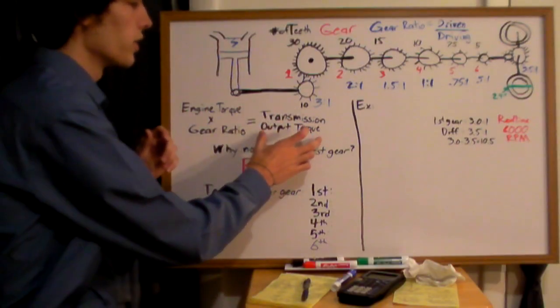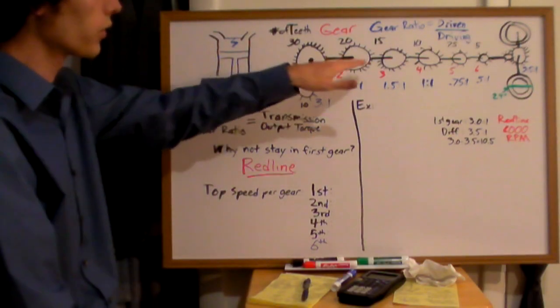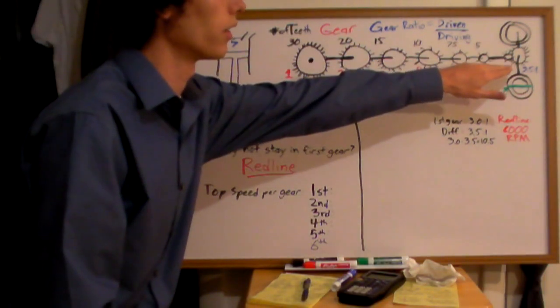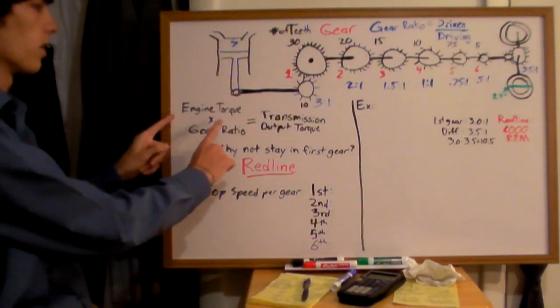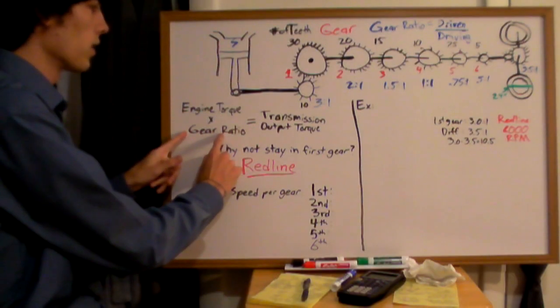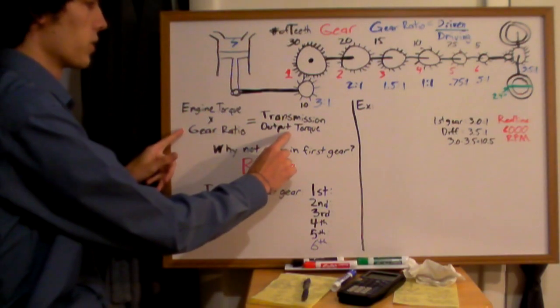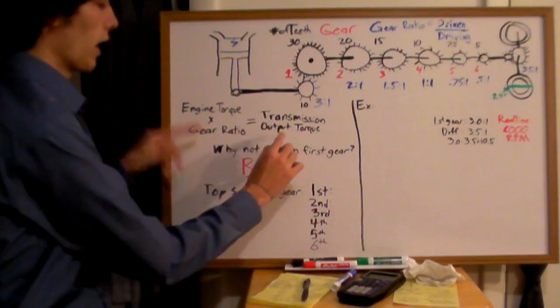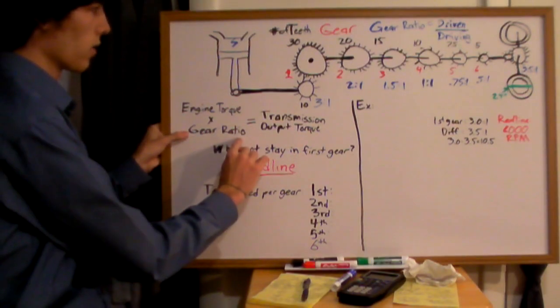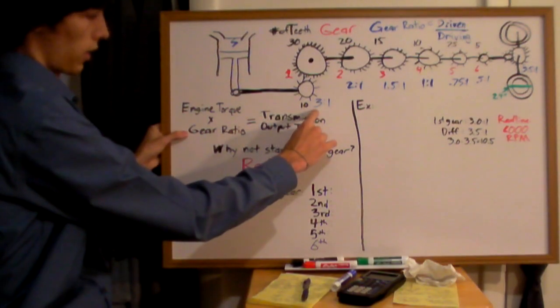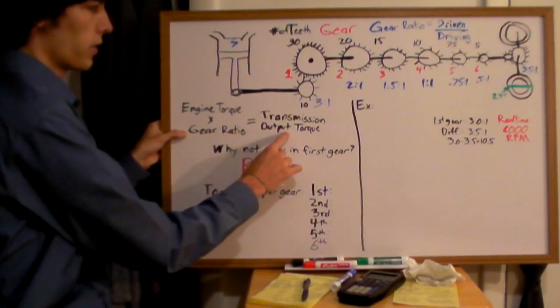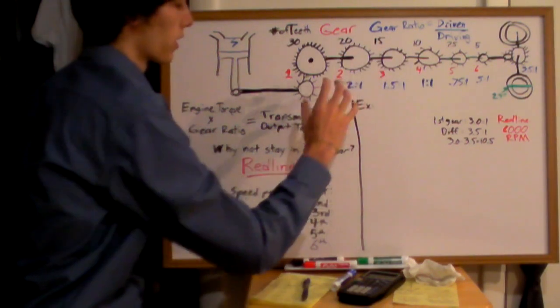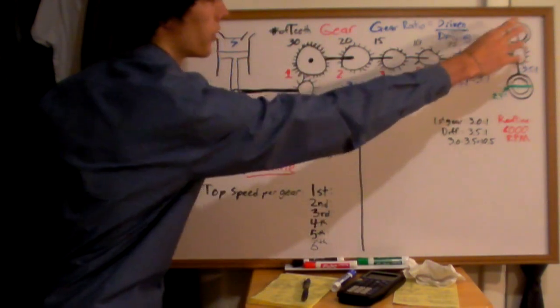The transmission output torque, the torque your transmission is putting on your rear driving wheels, can change. And that's this equation right here. Engine torque times gear ratio equals the transmission output torque. So as you can see, if you increase this gear ratio, let's say a gear ratio of 3, you've got your engine torque times 3, and that's your transmission output torque. That's the torque that your transmission is putting out onto your wheels.